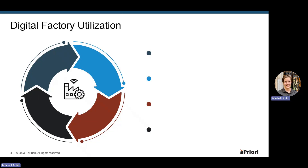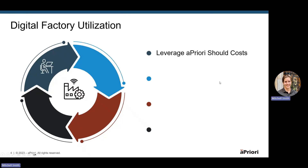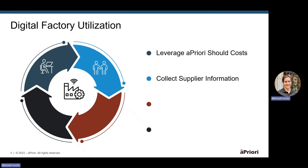When you save that data, it will apply to all users within your Apriori environment. A workflow of how you could actually use the digital factory manager really starts with the assumption that we are already leveraging the Apriori should costs. So here I'm going to assume that a user — the digital factory manager — has been using Apriori, getting Apriori should costs out of the system, and then we can use these should costs with our suppliers. So this is tying it into that sourcing case study.